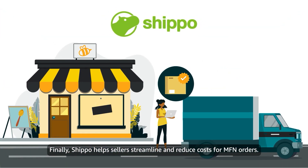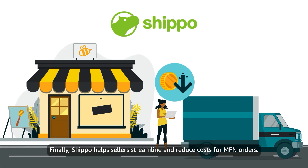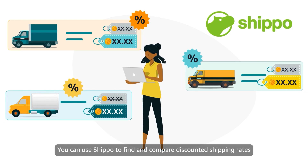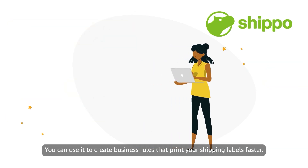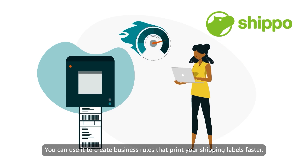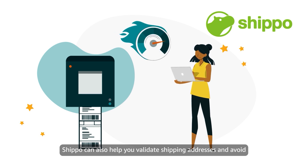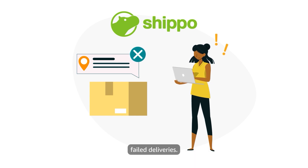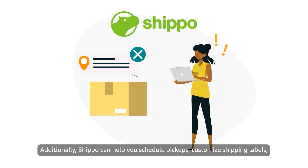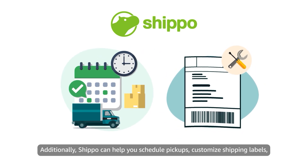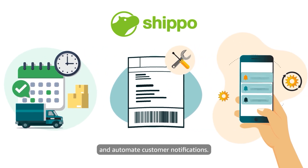Shippo helps sellers streamline and reduce costs for MFN orders. You can use Shippo to find and compare discounted shipping rates across carriers. You can use it to create business rules that print your shipping labels faster. Shippo can also help you validate shipping addresses and avoid failed deliveries. Additionally, Shippo can help you schedule pickups, customize shipping labels, and automate customer notifications.